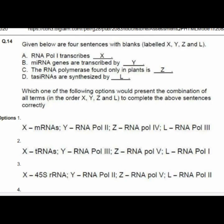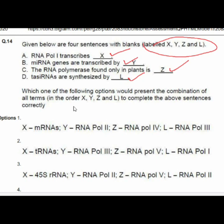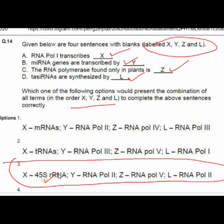Question 14 gives four sentences with blanks labeled X, Y, Z, and L: RNA Pol 1 transcribes X; miRNA genes are transcribed by Y; the RNA polymer formed only in plants is Z; tasiRNA are synthesized by L. The third option is correct: X is 45S rRNA; Y is RNA Pol 2; Z is RNA Pol 5; and L is RNA Pol 2.